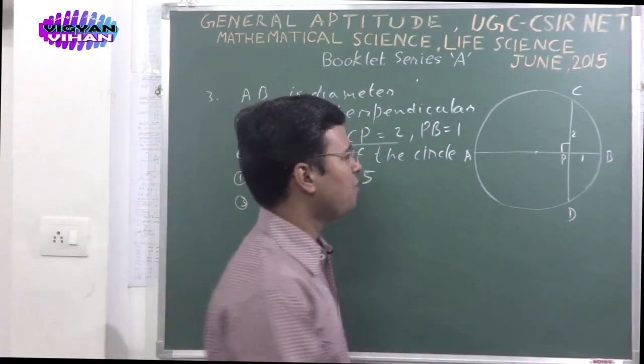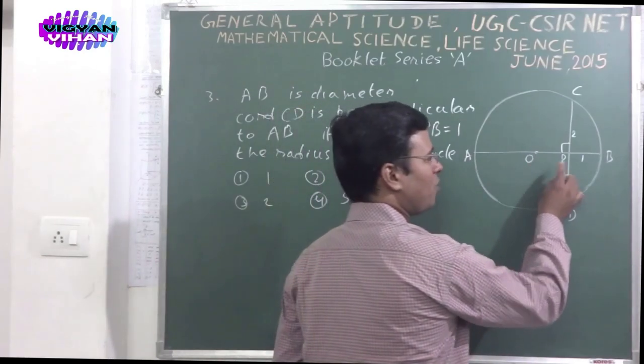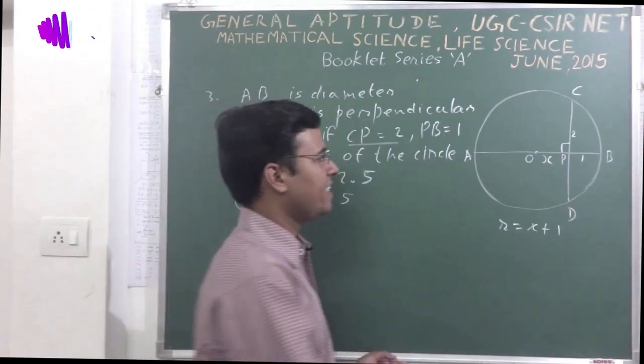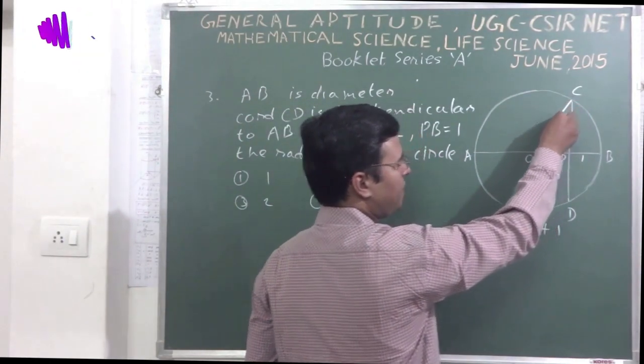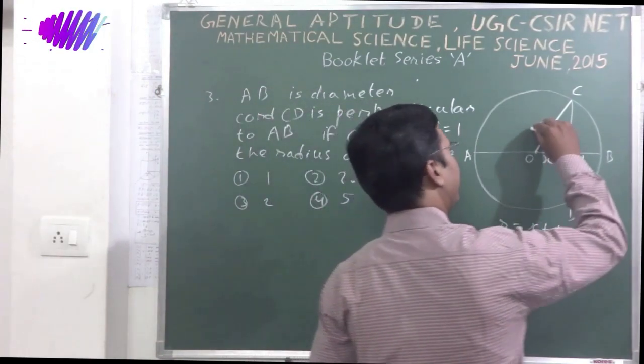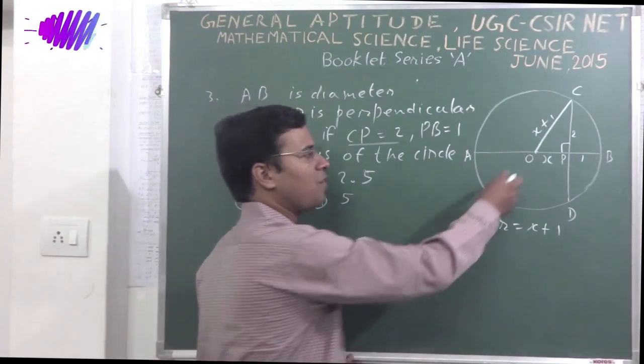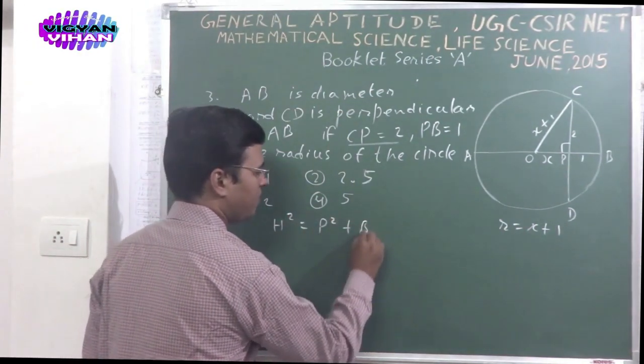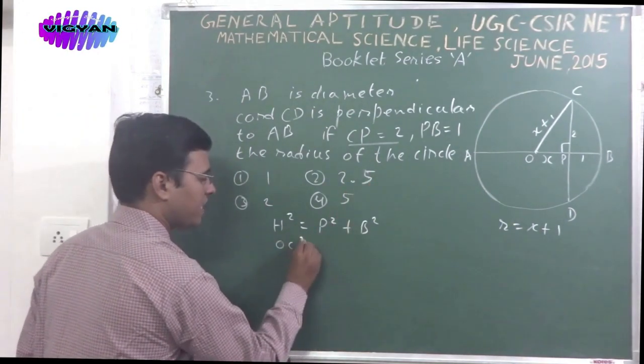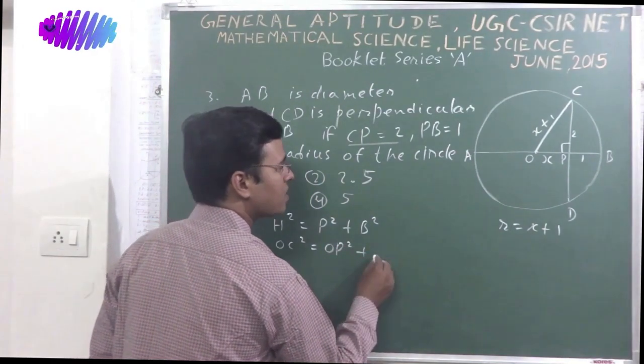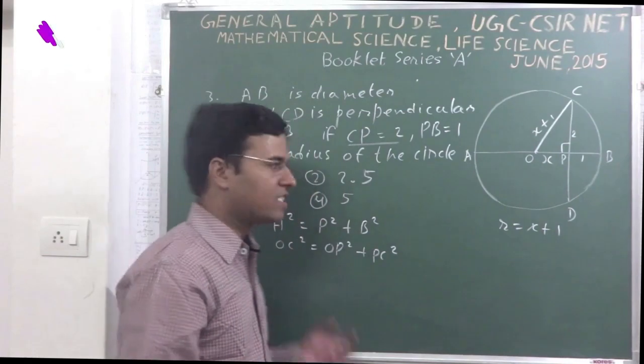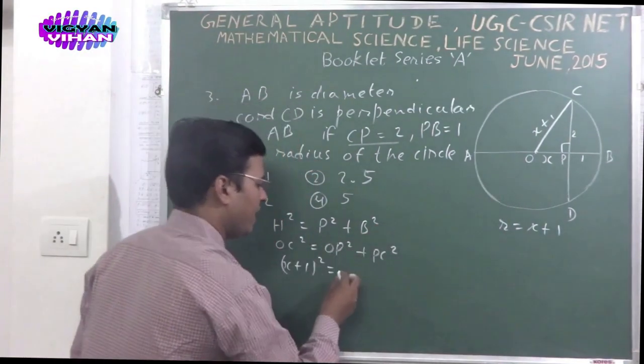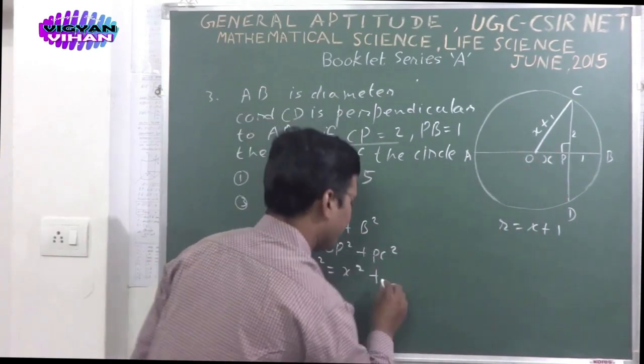So let's start. First, we assume the center of this circle is O. Line segment OP may be x. Then the radius of this circle would be x plus 1. Then again join the O and C points. OC is radius of this circle. It would be x plus 1 now. Then from the Pythagoras theorem, we write here: the hypotenuse square is equal to perpendicular square plus base square. Or you can write here, OC square is equal to OP square that is x square plus PC square. Then put the expression here. OC is now x plus 1 square is equal to OP square that is x square plus PC square that is given 2 square.